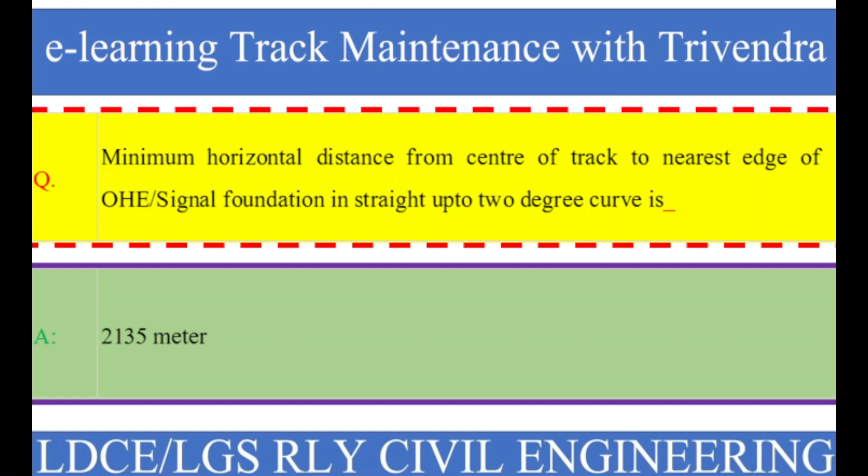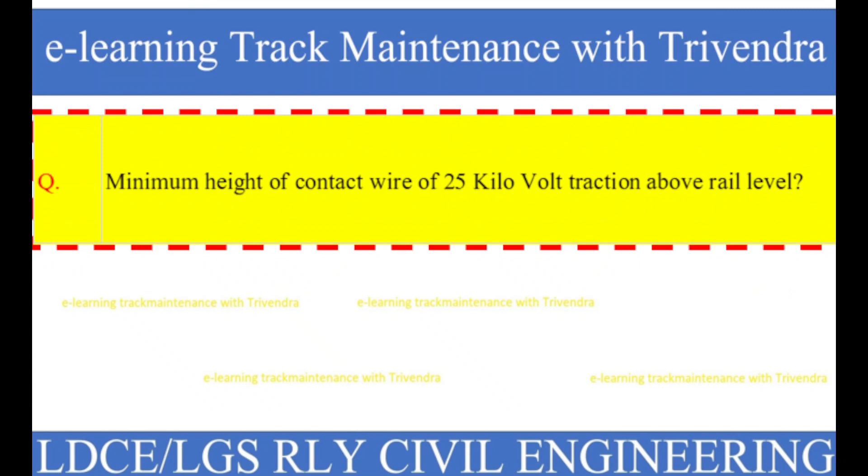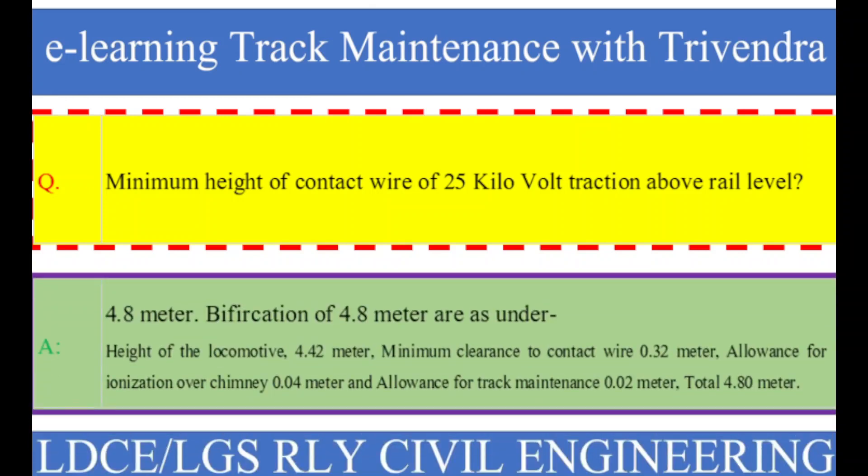Question number 54: Minimum height of contact wire of 25 kilo volt traction above rail level. The right answer is 4.8 meters, broken down as follows: height of locomotive 4.42 meters, minimum clearance to contact wire 0.32 meters, allowance for ionization over chimney 0.04 meters, and allowance for track maintenance 0.02 meters.